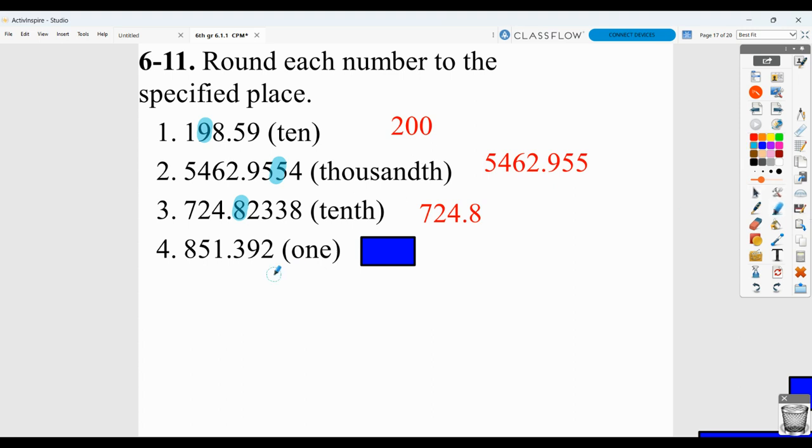And then here, the 1s place, to the right of that is a 3. We round down, so we get 851. Again, the 3 has told us to round down. Once it's done its job, it and everything behind it becomes 0s, or since they're behind a decimal point, they can just drop off.